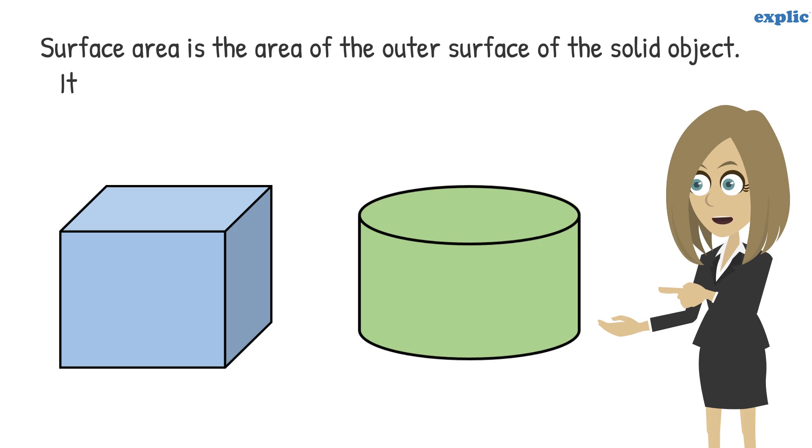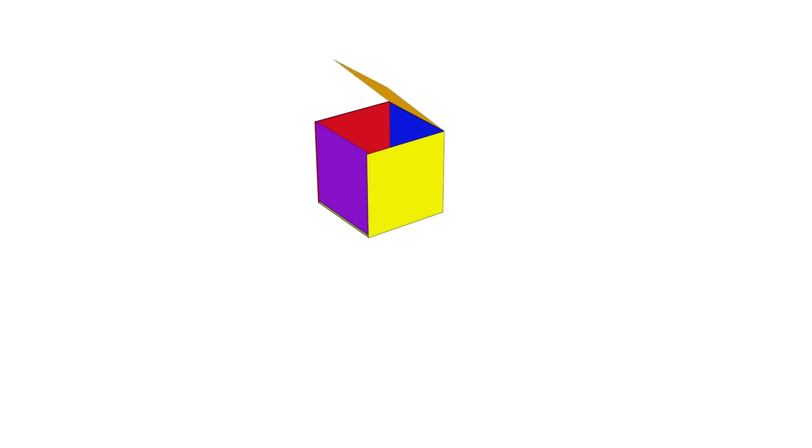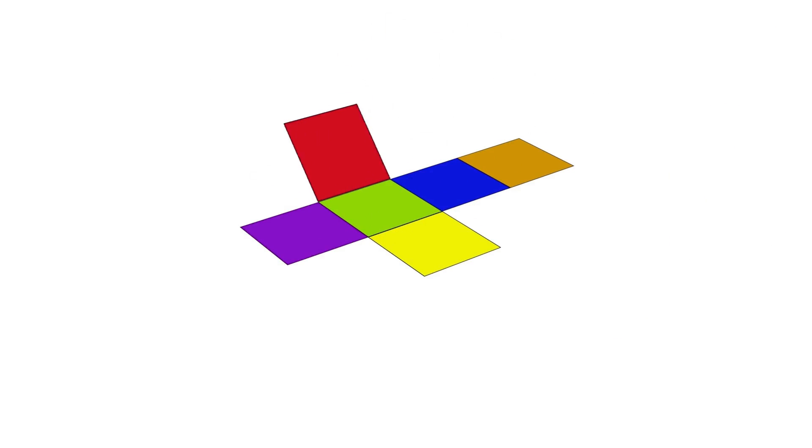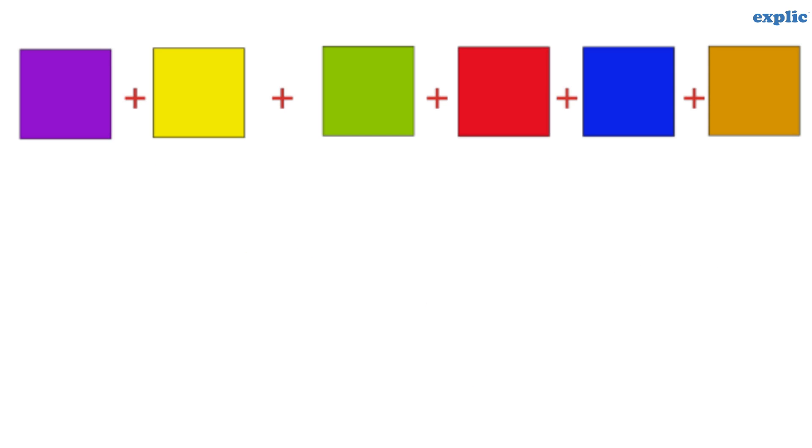It is the sum of areas of surfaces that make the solid object. For example, the surface area of the cube is the sum of the areas of all six squares, which is equal to 6 multiplied by the area of one square.